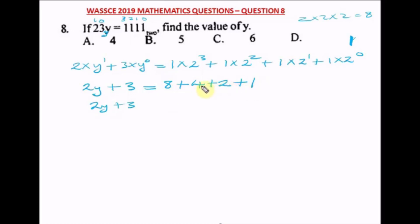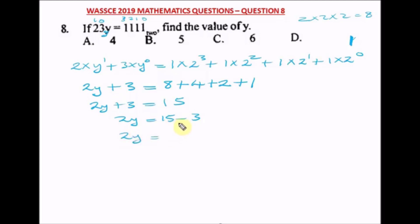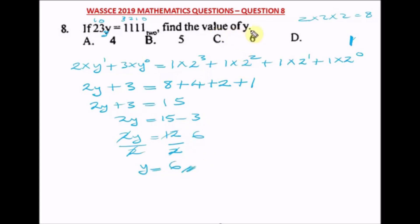Don't make the mistake of treating 2⁰ as zero — any number raised to power zero is one. So 2y = 15 − 3 = 12, giving y = 6. Our right option is option C.